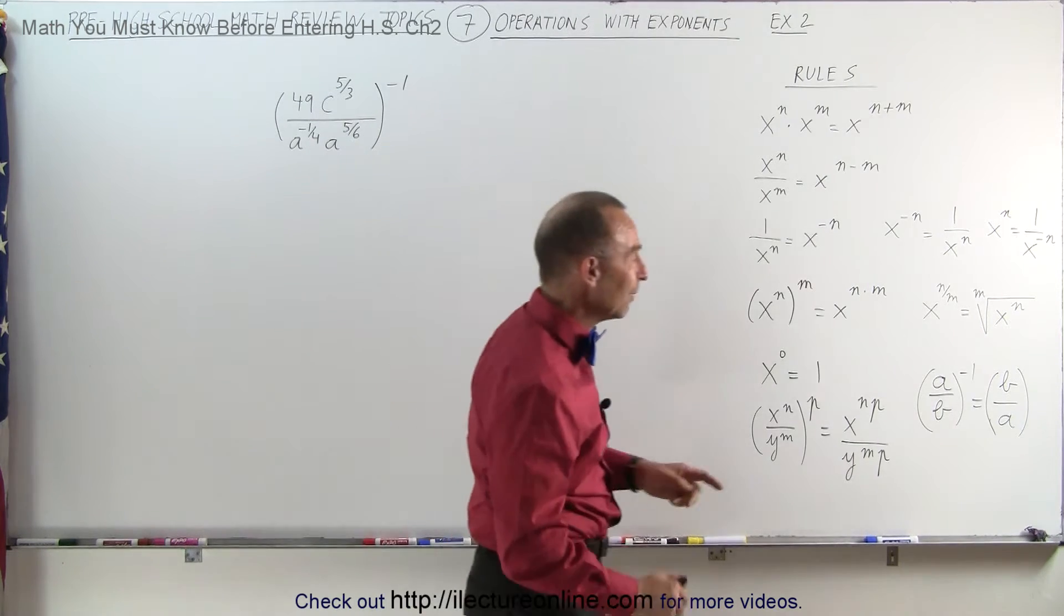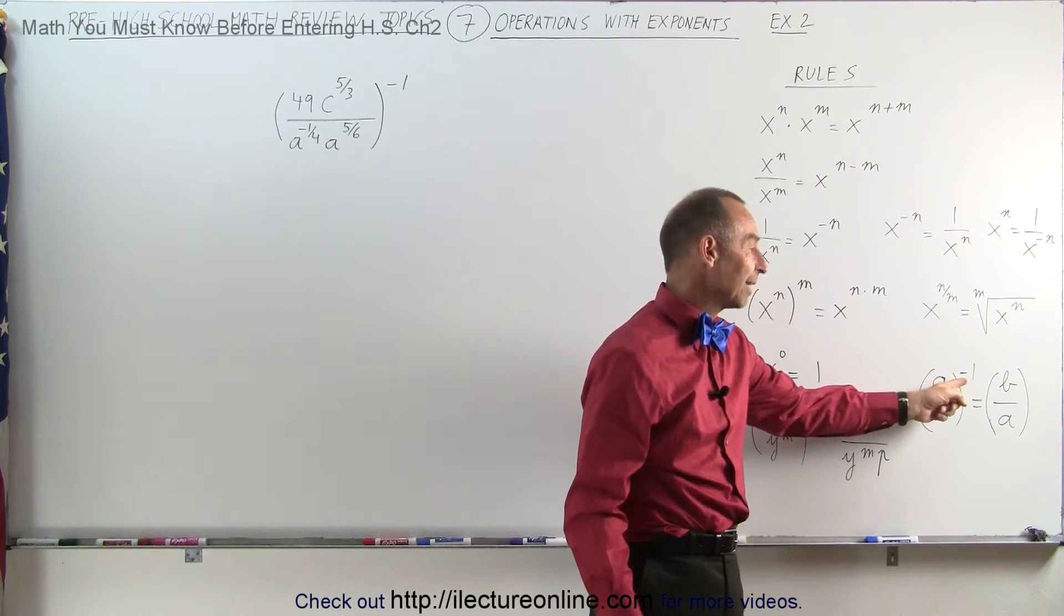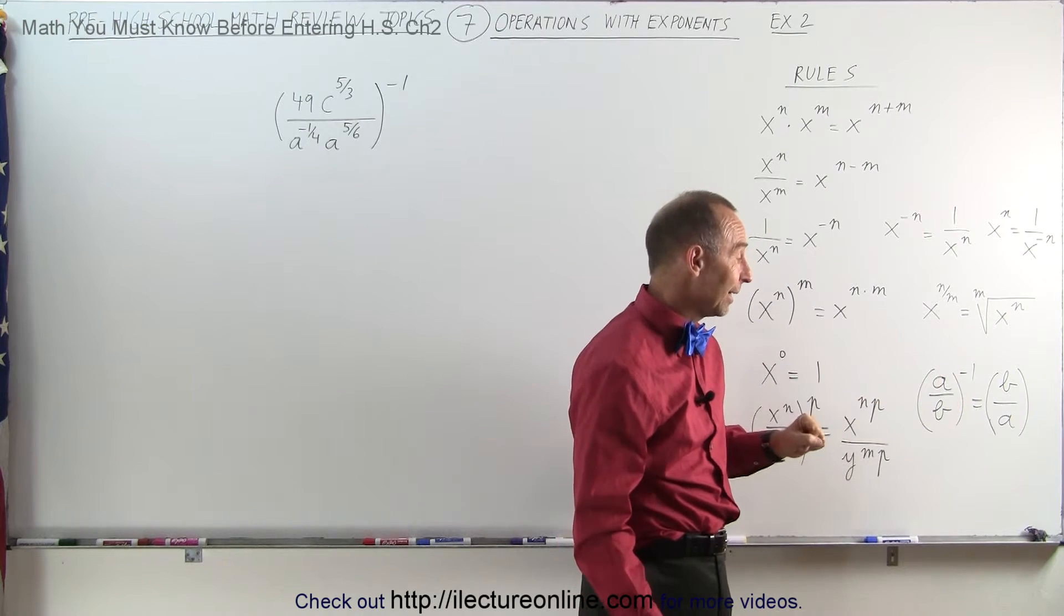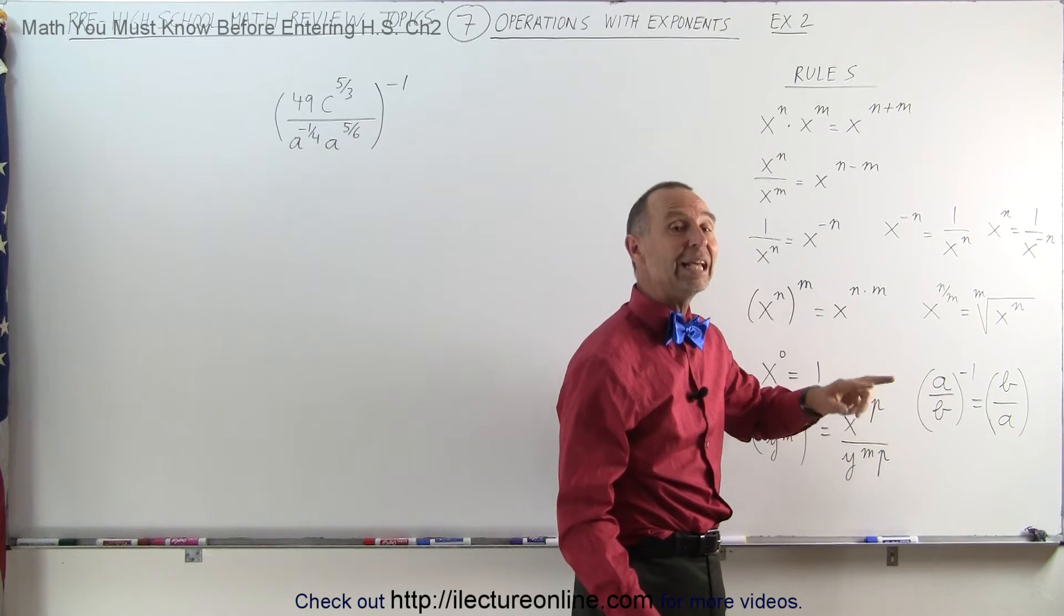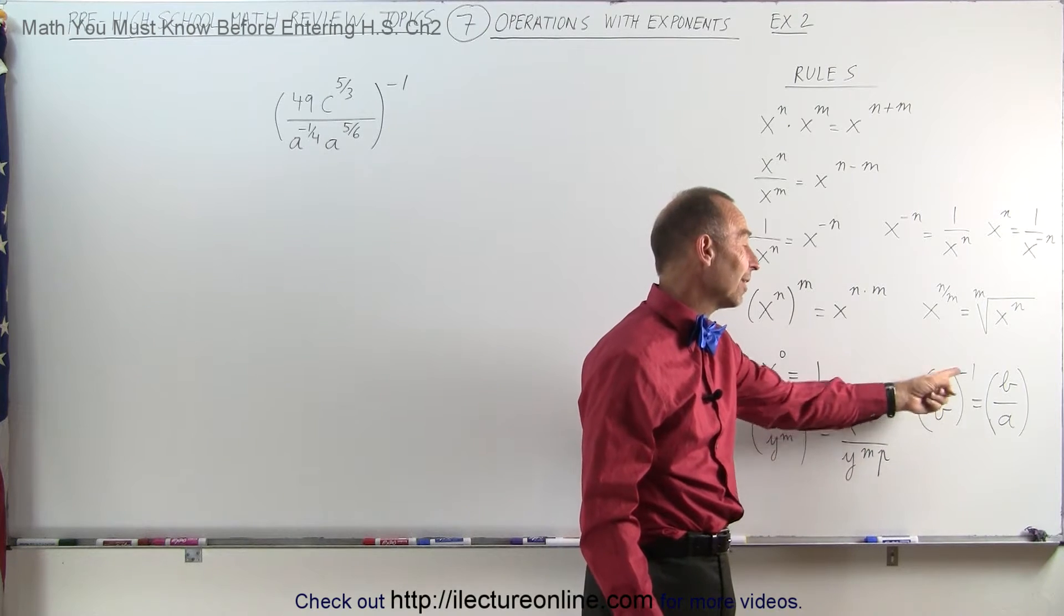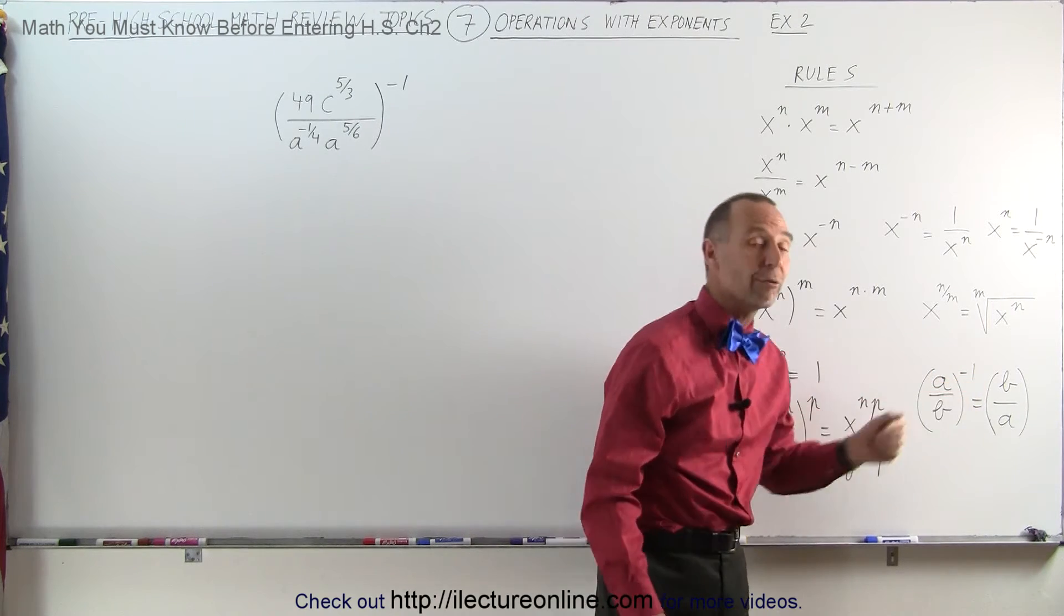It's right over here. If you have a fraction that's raised to a negative exponent like negative 1, that is the same as simply taking the inverse of that fraction. So a over b raised to negative 1 power is the same as b over a.